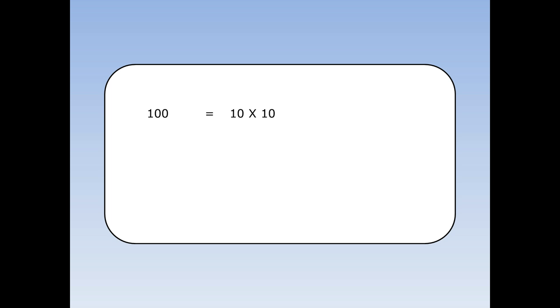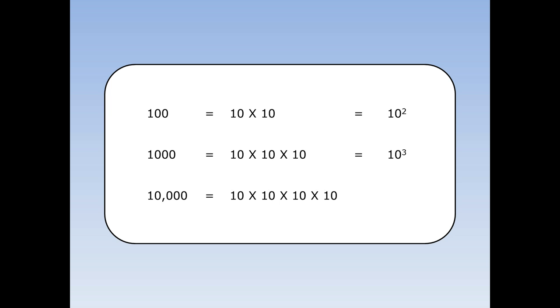Let's remind ourselves about powers of ten. A hundred equals ten times ten, which we can also write as ten squared. A thousand equals ten times ten times ten, which we can also write as ten cubed. Ten thousand is ten times ten times ten times ten, which we can write as ten to the power of four.